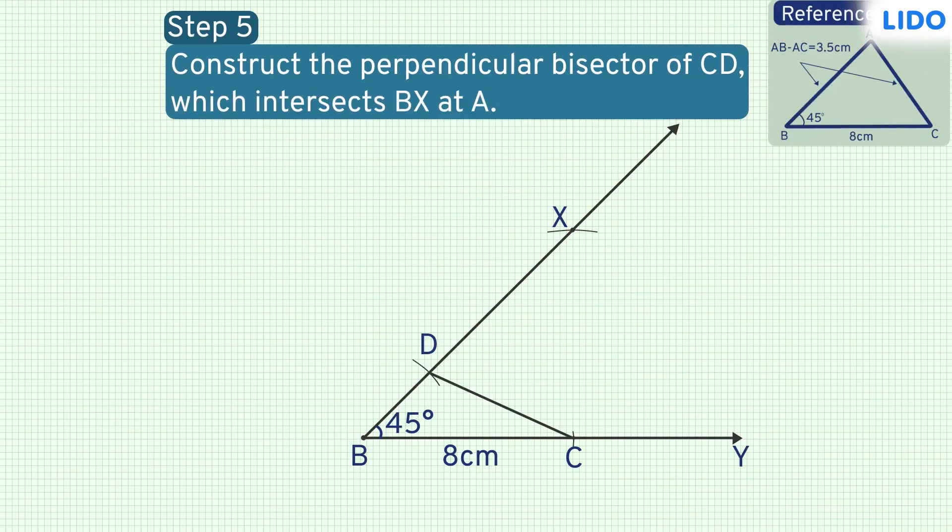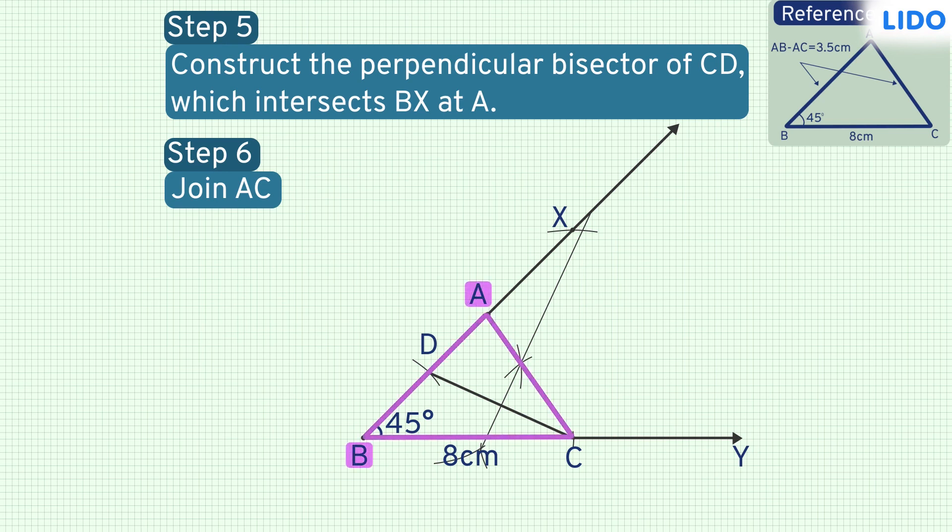So let's construct the perpendicular bisector of CD and name the point at which the perpendicular bisector intersects BX as vertex A. Then, joining A and C, we get the required triangle ABC.